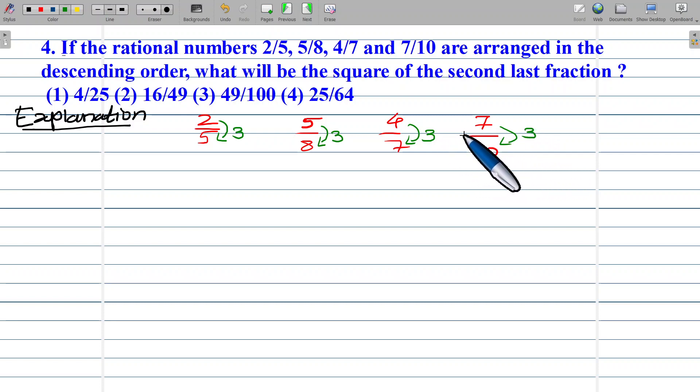The difference between numerator and denominator is the same for all fractions. When the denominator is greater than the numerator by 3 in each case, the greater the numerator, the greater the rational number. So we can apply descending order based on the greater numerator.